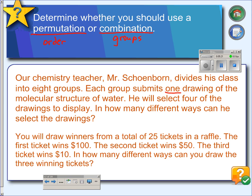So since they're only groups, we would have 8 groups. And he's choosing 4 drawings. So it would be 8C4. And that comes out to 70.